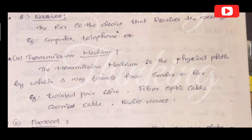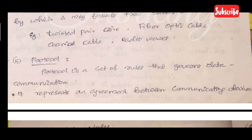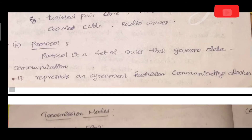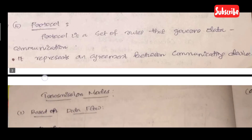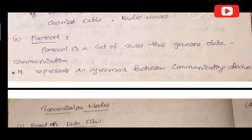The fifth component is protocol. Protocol is a set of rules that governs data communication. It represents an agreement between the communicating devices — such as the sender and receiver. That's all about the components of a data communication system.